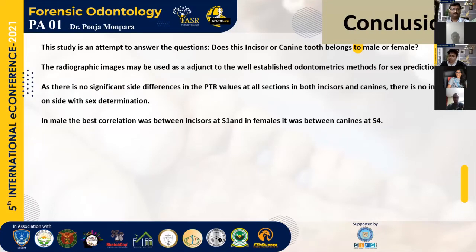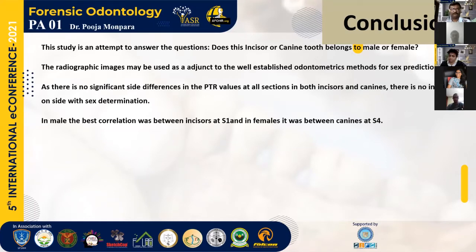Coming to the conclusion. This study attempts to answer whether the incisor and canine tooth belongs to a male or female. Radiographic images may be used as an adjunct to the well-established odontometric methods for sex prediction. As there is no significant side difference in the PTR value of all sections in both the incisor and the canine, there is no influence of side on sex prediction. In the male, the best correlation was observed in the incisor at the sagittal S1 section, and in the female, it was observed in the canine at the S4 section.